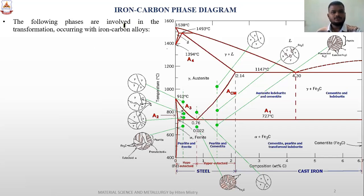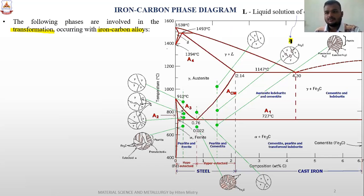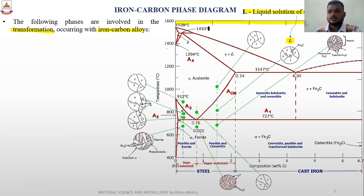First of all, the following phase involves the transformation occurring with the Iron-Carbon Alloy. We are looking at the transformation. As we see here, it is in a liquid form. We are going to learn the various sections with respect to different color coding. The liquid solidification of the Iron-Carbon Diagram - I am highlighting the liquid sections. These are all the sections that come under the category of liquid sections. The region inside this is the liquid region.